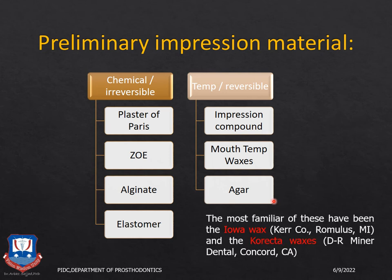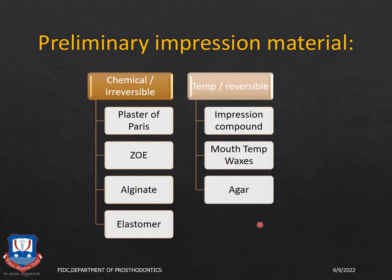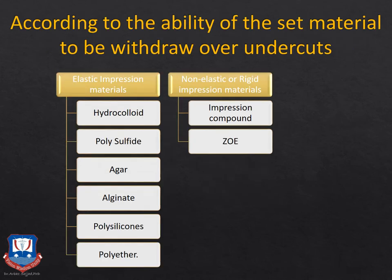The most common low-temperature waxes are Iowa wax and corrector wax, which are used for relining or taking primary impressions. The second classification of impression materials is based on their ability to be withdrawn from undercuts: either elastomeric or rigid/non-elastomeric impression materials. In elastomeric impression materials we have hydrocolloids such as alginate.